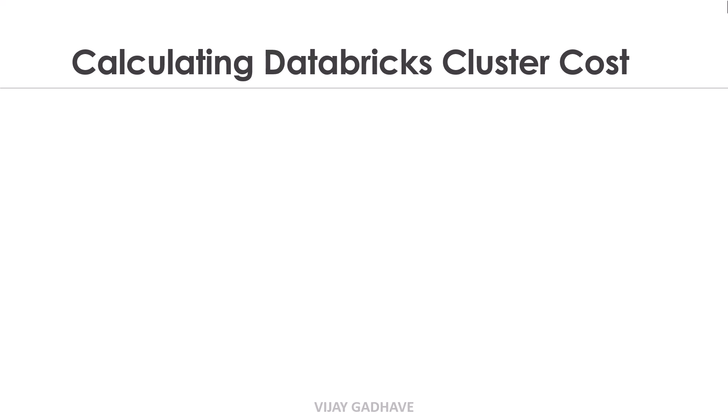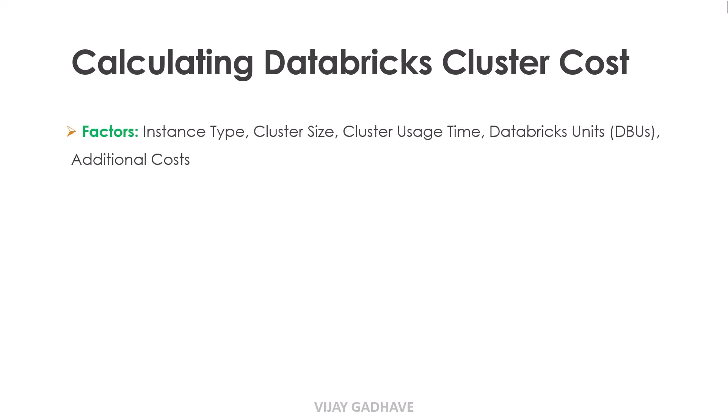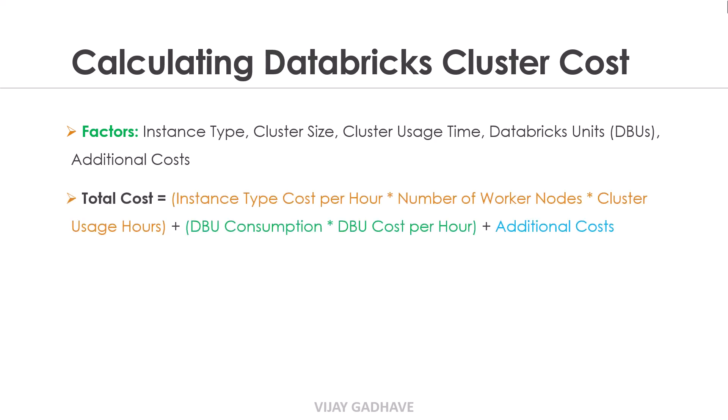Let us understand how to calculate the Databricks cluster cost. The factors are: instance type, cluster size, cluster usage time, Databricks units, and additional cost. The total cost formula is: instance type cost per hour × number of worker nodes × cluster usage in hours, plus DBU consumption × DBU cost per hour, plus additional cost.